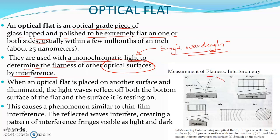When measuring using an optical flat, the optical flat is placed over the surface to be measured. Monochromatic light is directed onto it and gets reflected from two surfaces: one from the workpiece surface, and another from the bottom surface of the optical flat, which is a partially reflecting surface. As a result, we get interference and dark and white fringes as shown in picture B.